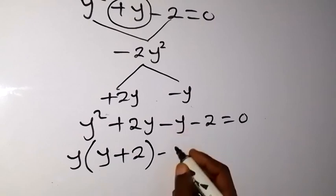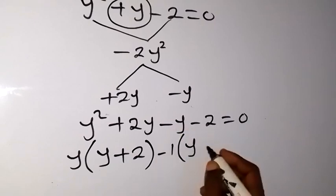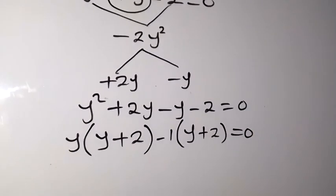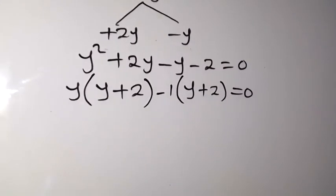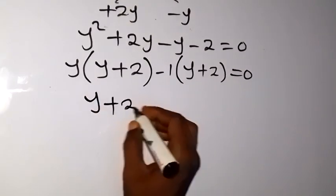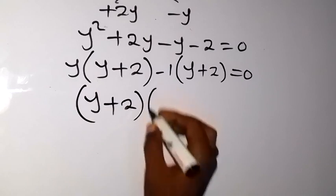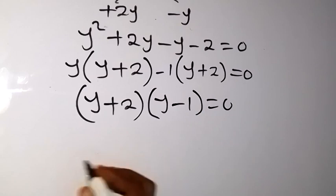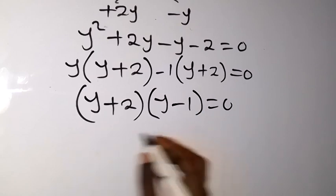Then what is common here is minus 1, then y, then plus 2 left, which equals to 0. You can see y plus 2 is common as well. We have y plus 2 common, then what is left here is y, what is left here is minus 1, equals to zero.